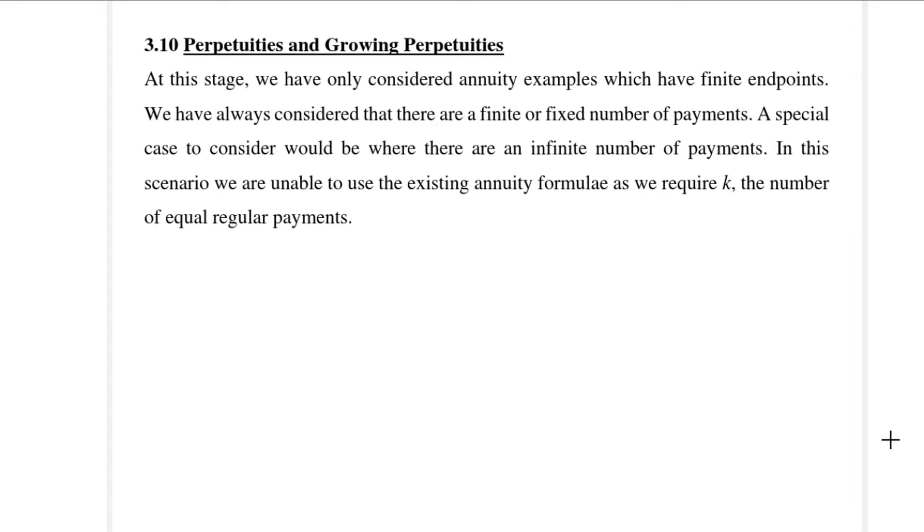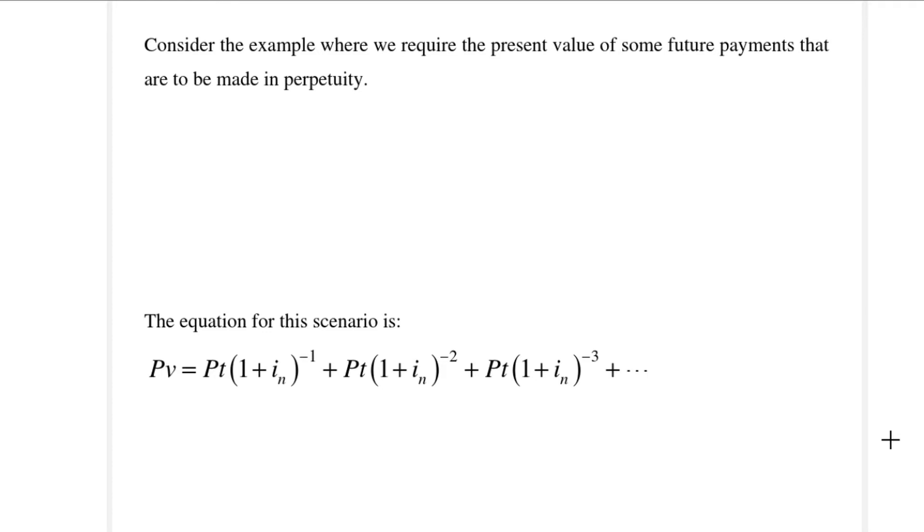A typical example of a perpetuity would be something like a pension fund where you would like to receive your pension on a monthly basis till the day that you die. If we look at the timeline it would look like the following: this is time 0 and then you get your first payment, your second one and this goes on and on. So there is no endpoint, there is not a fixed endpoint, we don't have the value of K.